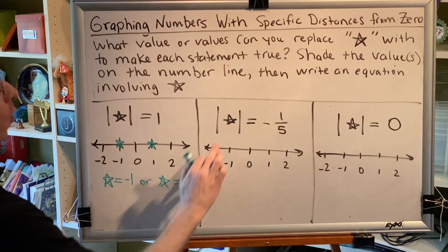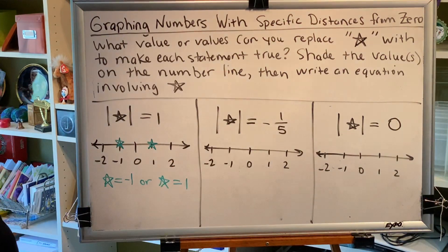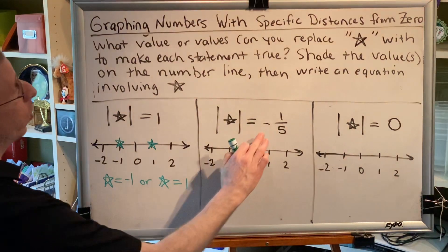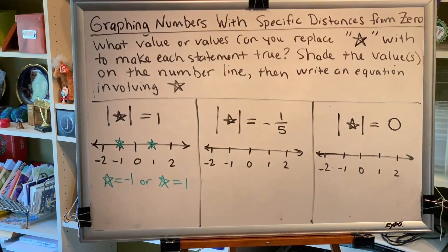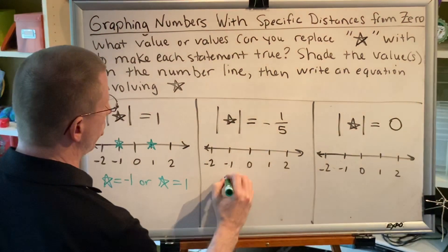In fact, no matter what number we put for star, when we take the absolute value, we will not get a negative result. Therefore, there is no solution to this problem.